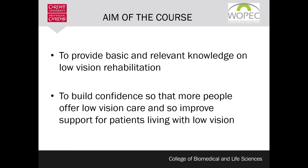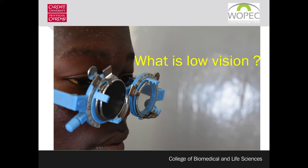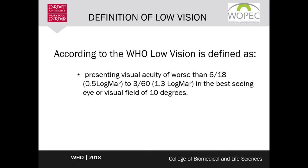To start the ball rolling, we would like to know what exactly low vision is. Low vision, as accepted by the World Health Organization, refers to the vision of anyone who presents to a hospital and when the vision is recorded, it is found that their best-seeing eye has a vision of worse than 6/18, or their visual field is less than 10 degrees. That is a long definition, so we'll try to break it down.